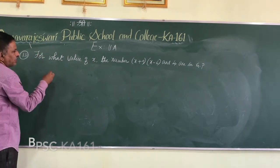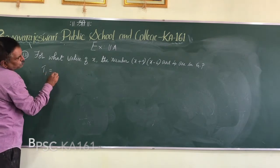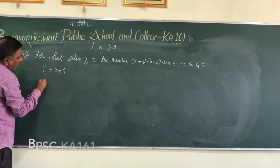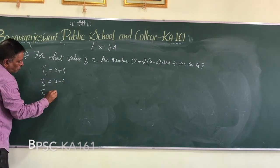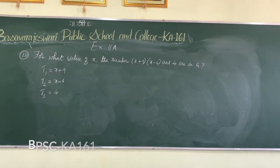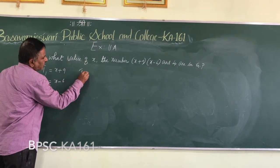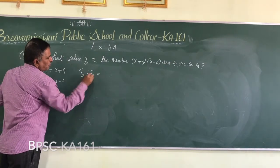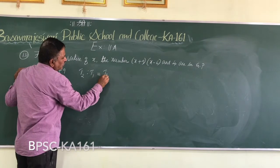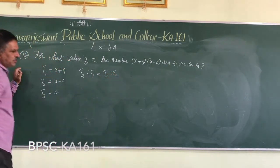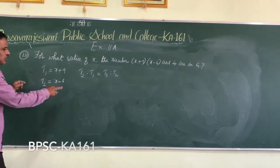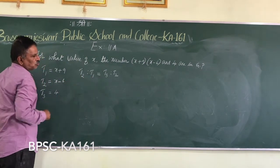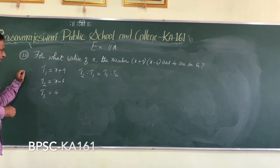We take the first term as X plus 9, the second term as X minus 6, and the third term as 4. Since it is a GP, we know that the ratio of the second term to the first term will be equal to the ratio of the third term to the second term. Since we have only three terms, that is the condition we apply.